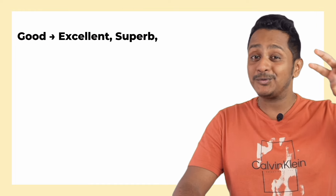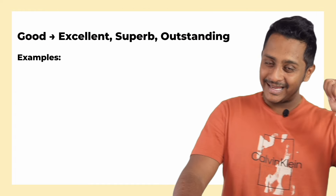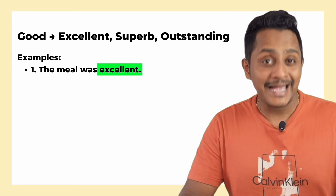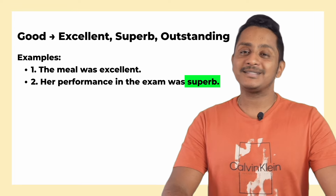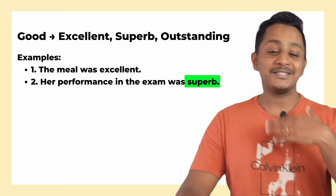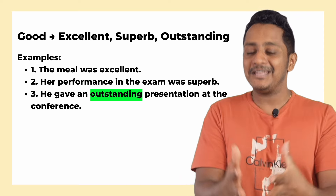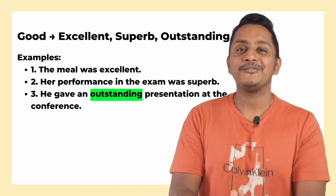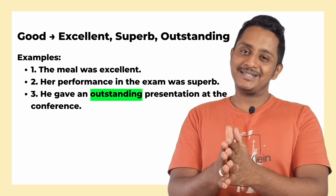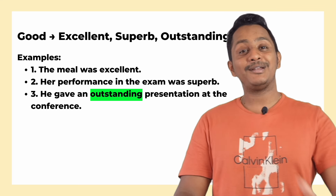The very first common word is 'good' — avoid using it because there are better ways to express it. The three replacements for 'good' are: excellent, superb, and outstanding. For example, instead of 'the meal was good,' say 'the meal was excellent.' Instead of 'her performance in the exam was good,' say 'her performance was superb.' Instead of 'he gave a very good presentation,' say 'he gave an outstanding presentation at the conference.'